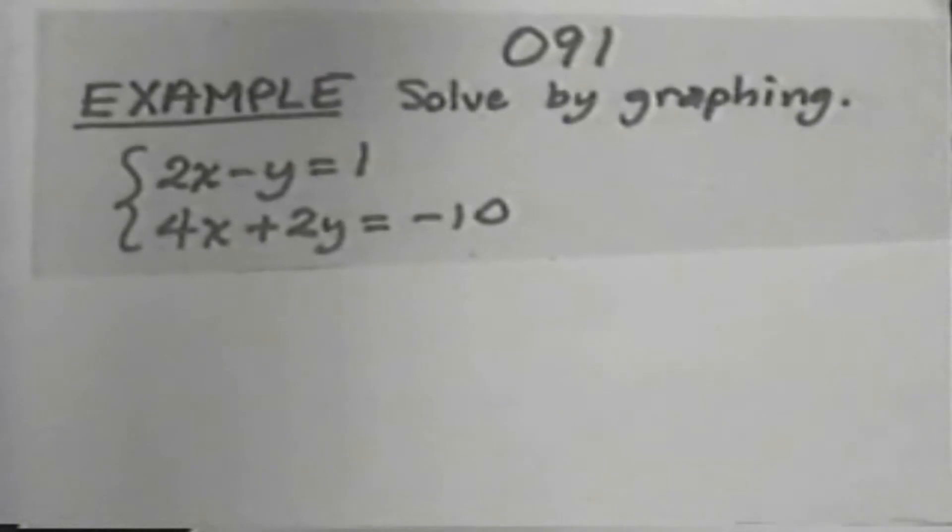Let's take a look at an example. Let's solve by graphing. Our example is 2x minus y equals 1, and then 4x plus 2y equals negative 10. Well, our first step is to graph the first equation, 2x minus y equals 1.